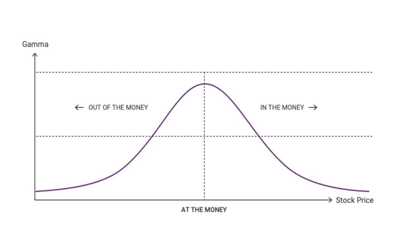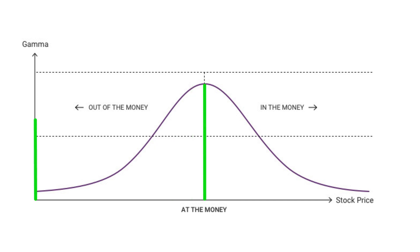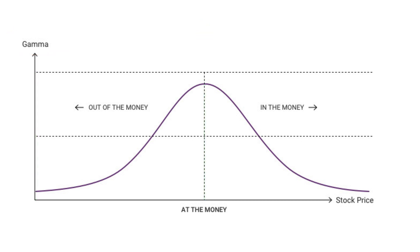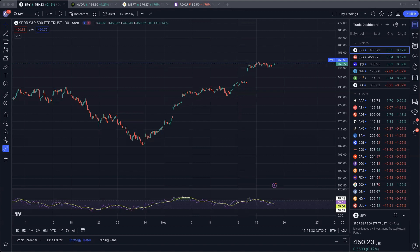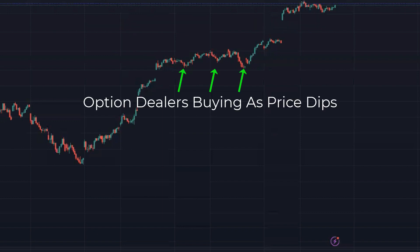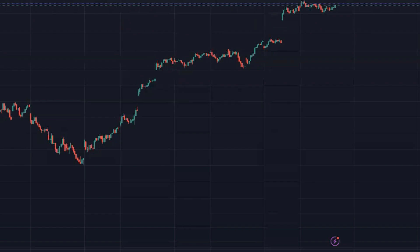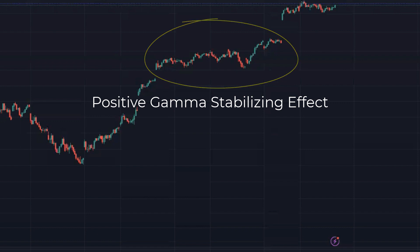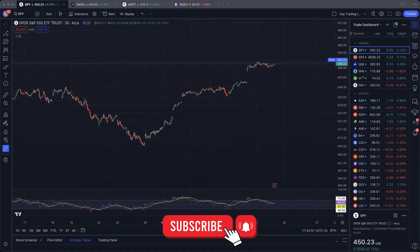Gamma is going to be highest when we are at the money. When we're in a positive Gamma environment, price is moving into this curve, and the more it moves into the curve, the more positive Gamma exposure is, and the higher the option prices at the at-the-money strikes are. In positive Gamma environments, option dealers are forced to hedge their positions by selling as price goes higher and buying as price goes lower, and this creates a stabilizing effect on the market.